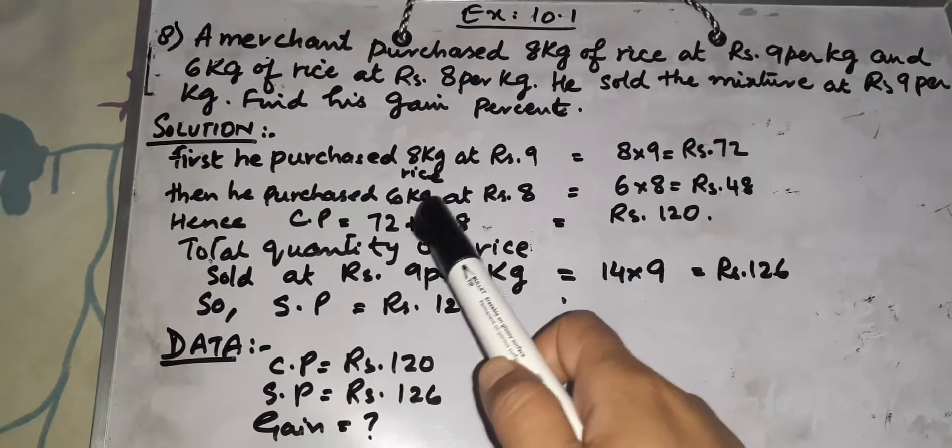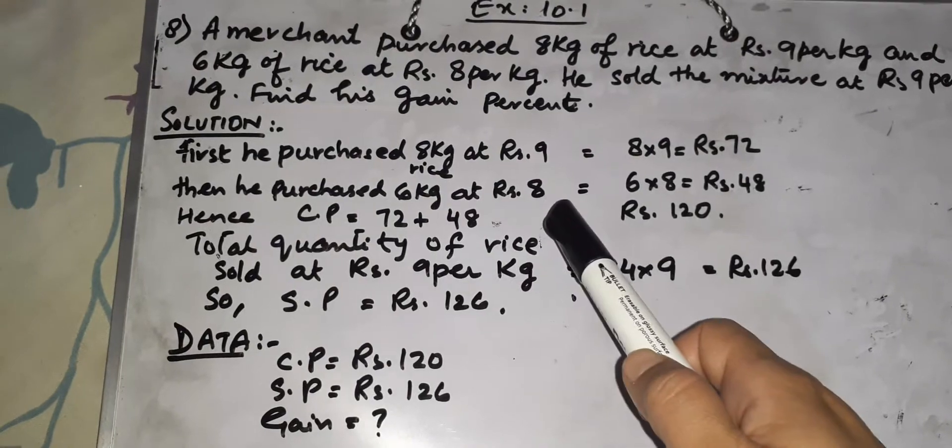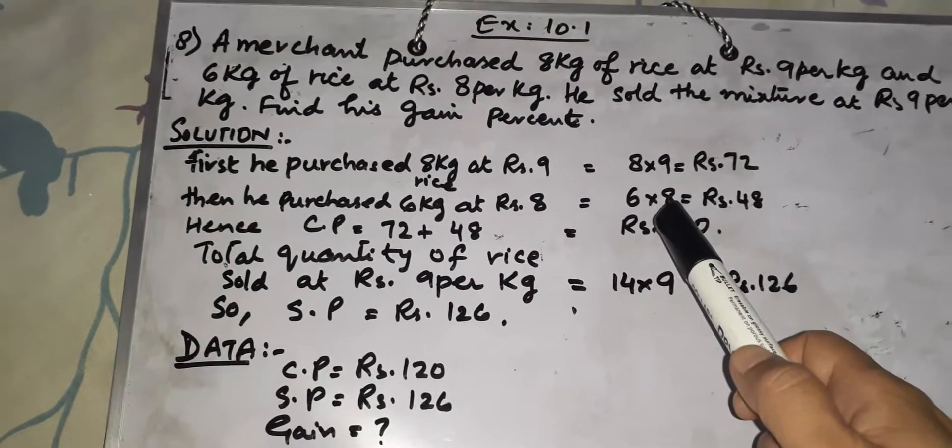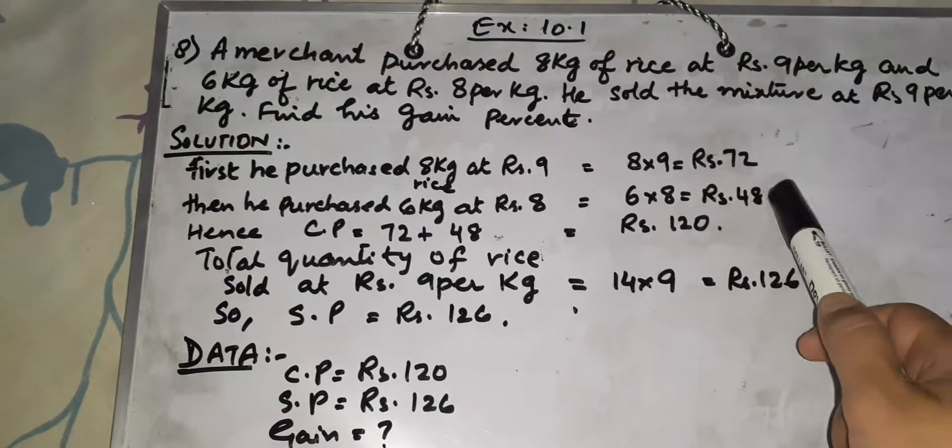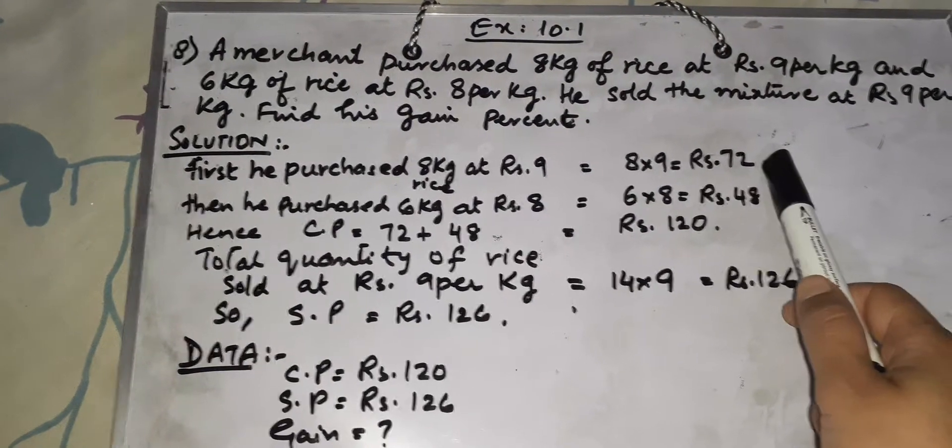Then he purchased 6 kg rice at Rs. 8, so 6 × 8 = Rs. 48.